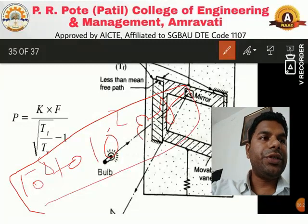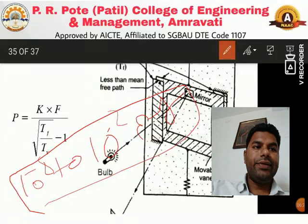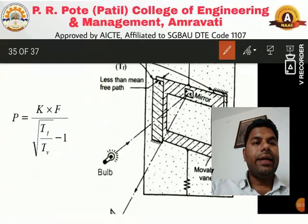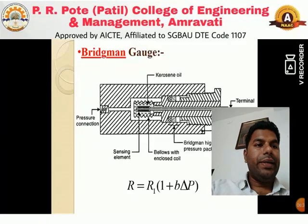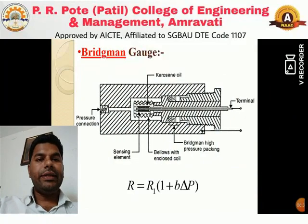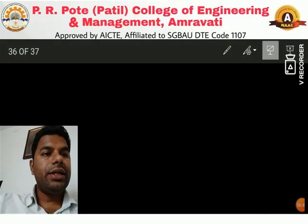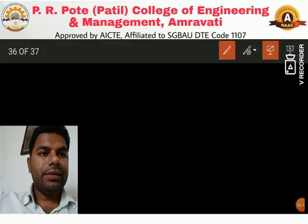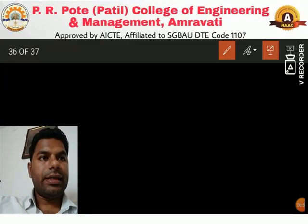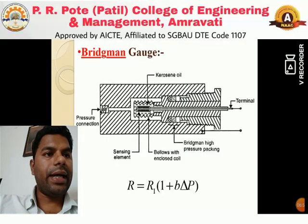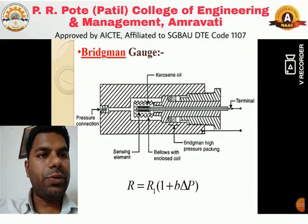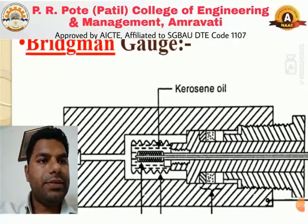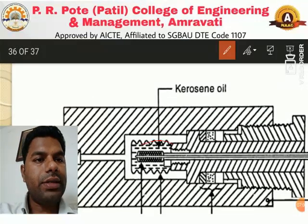Up to now we have discussed low pressure measurements — thermal conductivity gauges and the Norsen gauge are for low pressure. Now we will discuss a device used for high pressure measurement: the Bridgman gauge. The Bridgman gauge is a simple type of gauge. Before discussing it, we should know about the Wheatstone bridge network. Inside this gauge we are using a strain gauge technique.